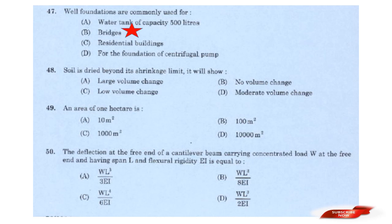Question: When soil is dried beyond its shrinkage limit, it will show? Options: Large volume change; No volume change; Low volume change; Moderate volume change. Answer: Option B — No volume change. Soil dried beyond its shrinkage limit shows no volume change.